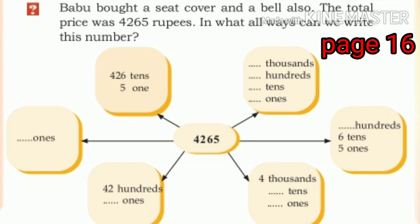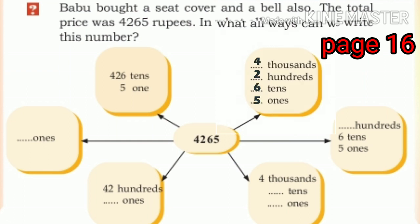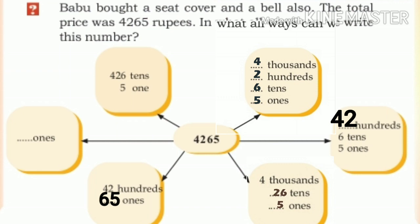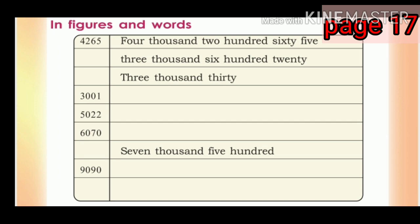It can be written as four thousands, two hundreds, six tens, five ones. Or forty-two hundreds, six tens, five ones. Or four thousand two hundred sixty-five ones.